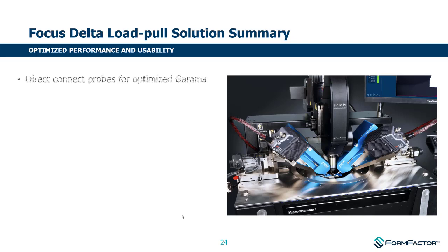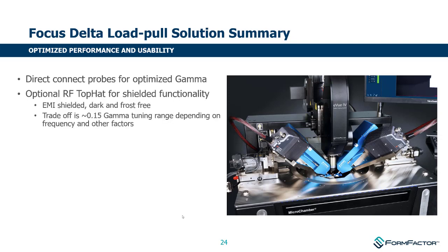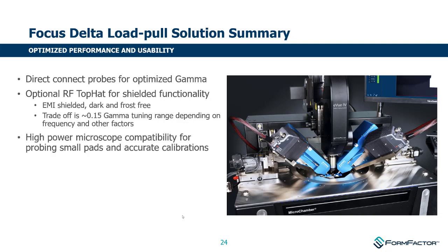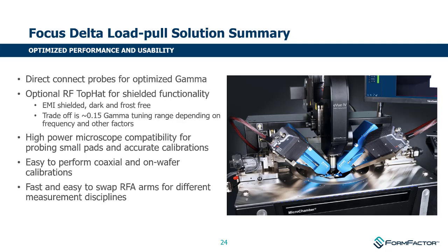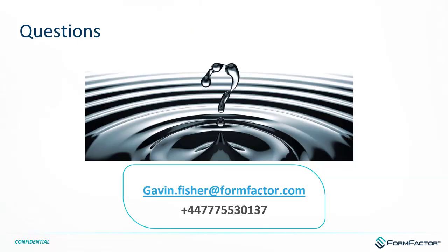As a quick overall summary: we've presented a direct-connect tuning capability for passive load pull tuning with optimized gamma. We have the ability to use the same tuners for over-temperature work in a dark, frost-free environment with a minimal trade-off in gamma — on the order of 0.15 — at the higher frequencies. We can still access high-power microscopes with conventional objective lenses to probe small pads, and perform calibration with both coaxial and tuner calibration in a standard, easy-to-do format. We also have fast and easy swap of RFA arms for different measurement disciplines, and it fits on all FormFactor platforms. I hope this presentation was useful. Thank you.